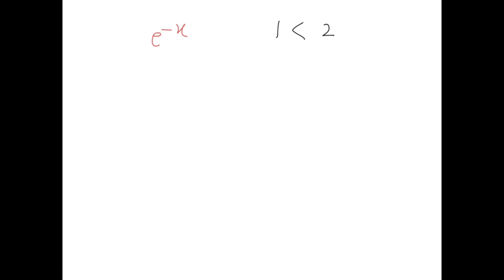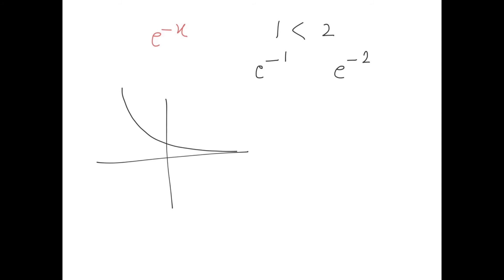Now let's check another function: e^(−x) applied to the same inequality one is less than two. On the left hand side I will have e^(−1) and on the right hand side e^(−2). The graph of e^(−x) shows it is a decreasing function. A strictly decreasing function reverses the inequality, so the inequality will change: e^(−1) is more than e^(−2).